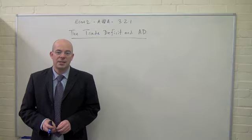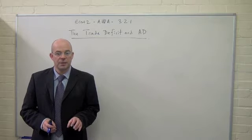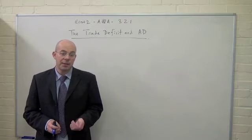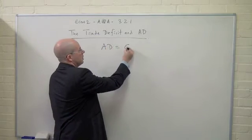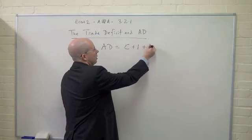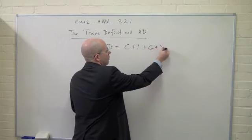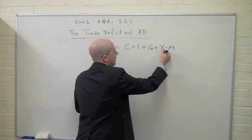So we're going to look at the aggregate demand curve. If you remember components of aggregate demand, you've got aggregate demand equals consumption plus investment plus government expenditure plus exports minus imports.